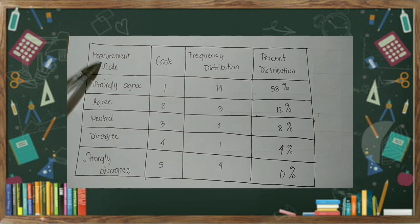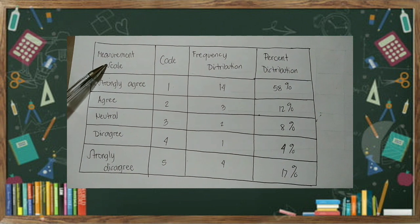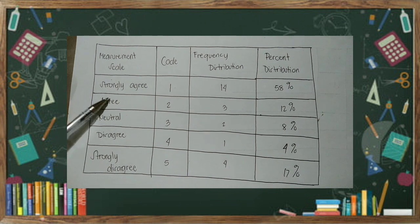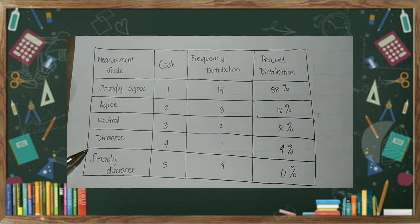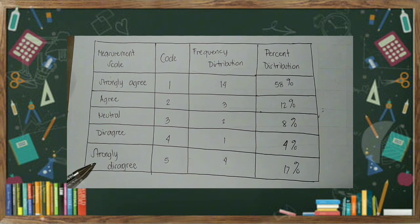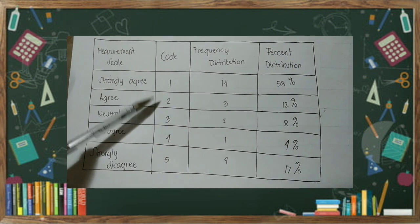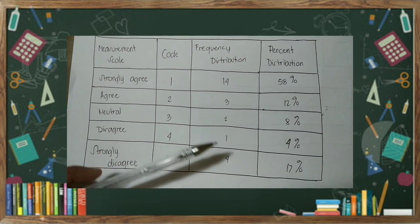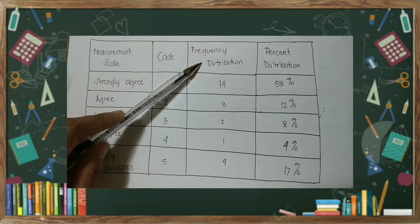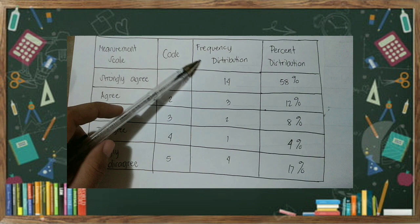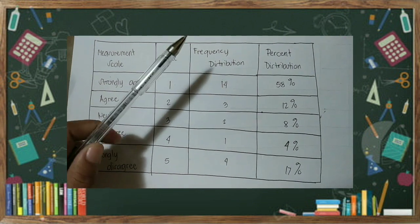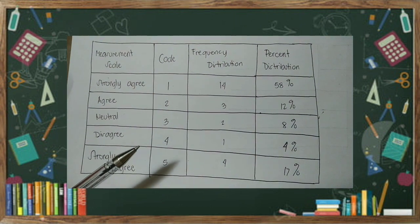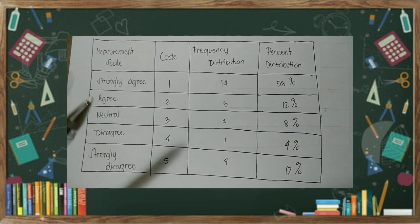So, you can see, you have the first column, the measurement scale. You can see the strongly agree, agree, neutral, disagree, strongly disagree, and the code 1, 2, 3, 4, 5. Here you put the frequency distribution of the 24 sample size or total respondents.